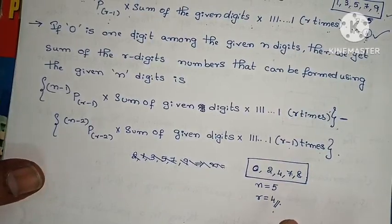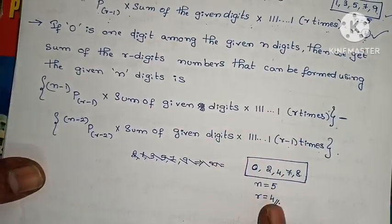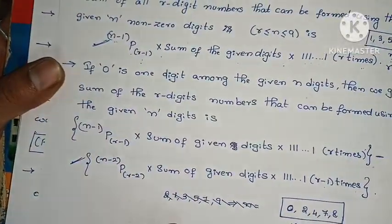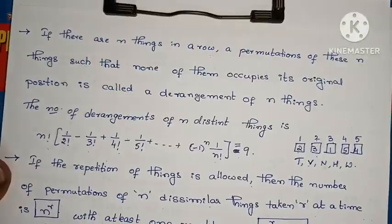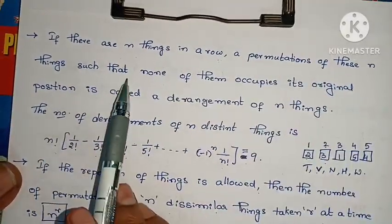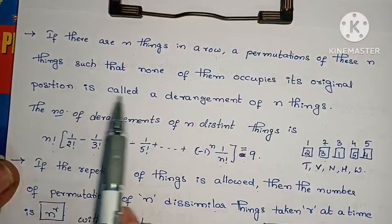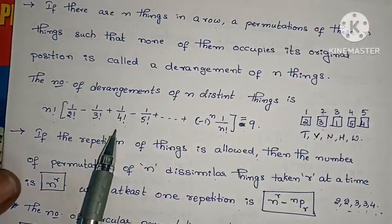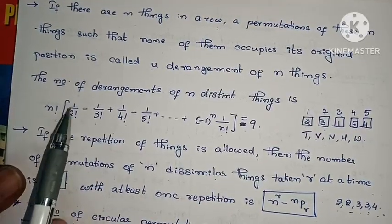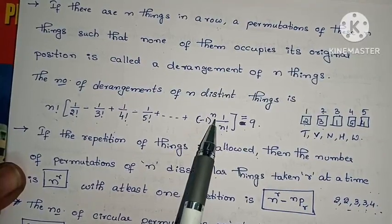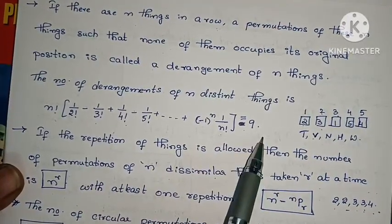A permutation of n things such that none of them occupies its original position is called a derangement of n things. The number of derangements equals n factorial into (1/2! minus 1/3! plus ... plus (-1)^n into 1/n!).